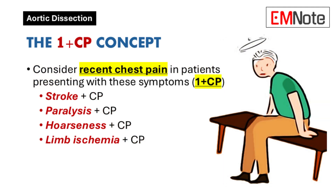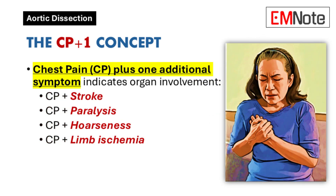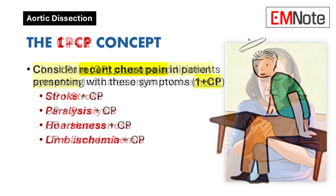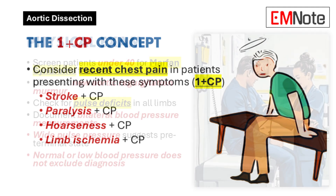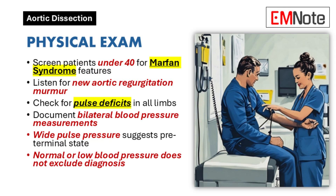There's a useful framework: CP+1 and 1+CP. Think of the aorta like a highway with exits. CP+1 means chest pain plus another symptom caused by blood flow being blocked at one of those exits — for example, chest pain followed by a stroke or paralysis. 1+CP is the reverse: for a patient presenting with stroke or paralysis, we ask retrospectively whether they had any torso pain beforehand to connect the dots.